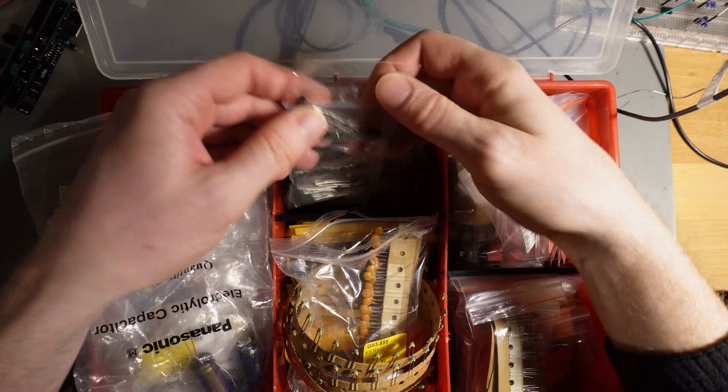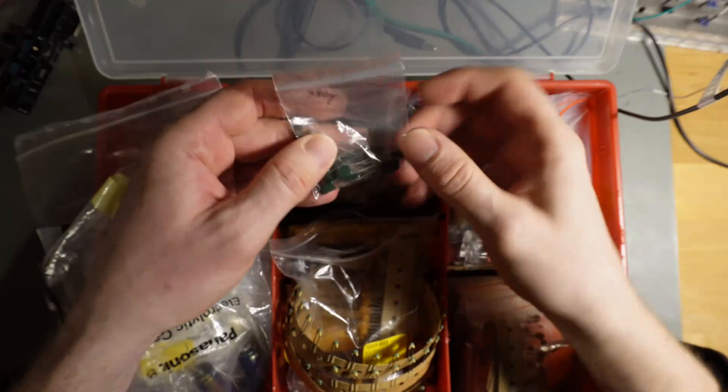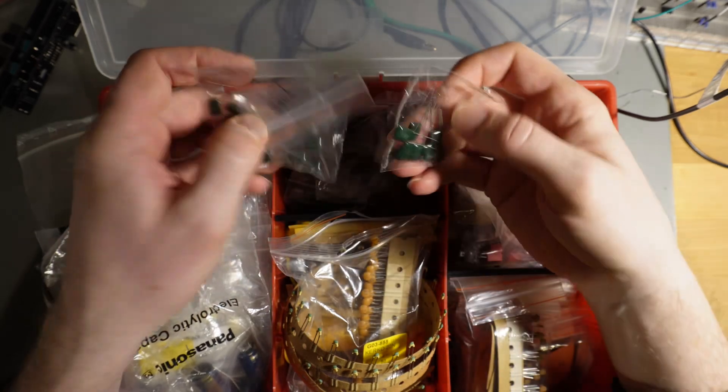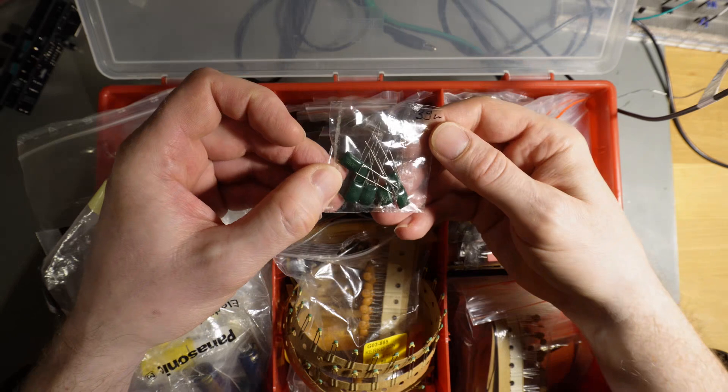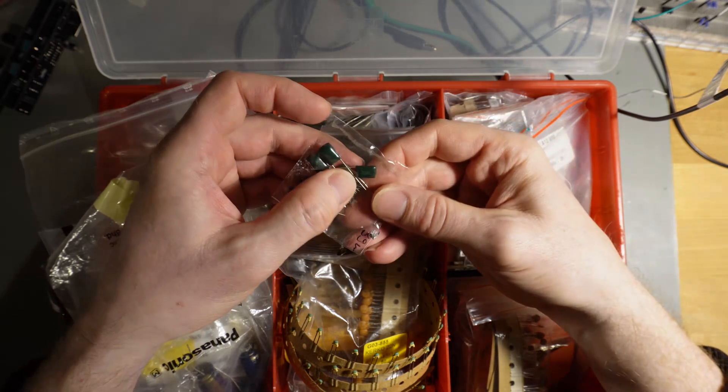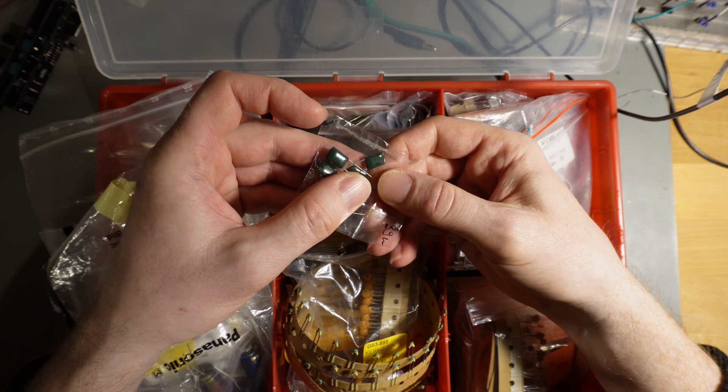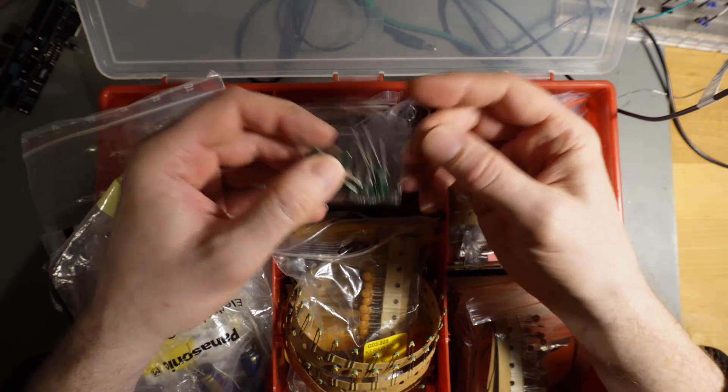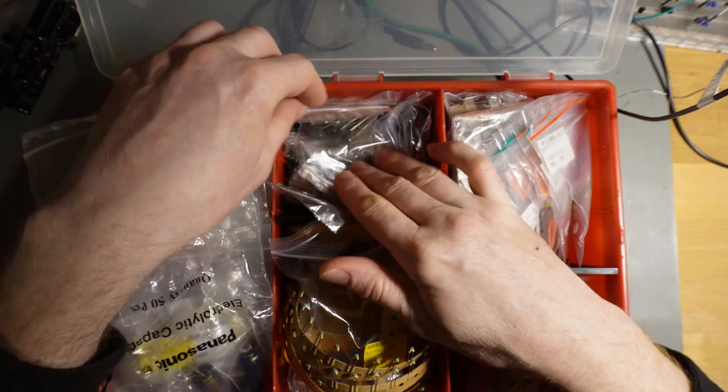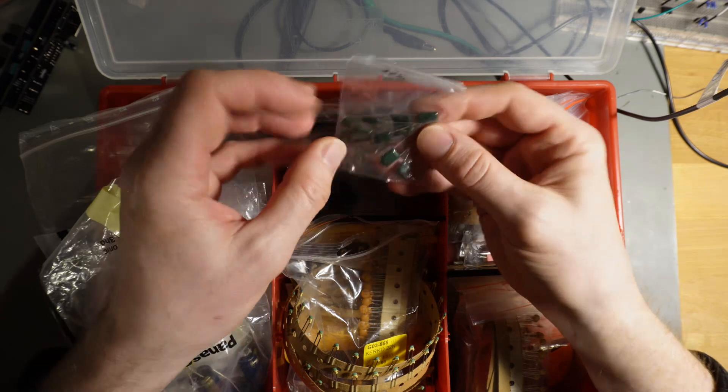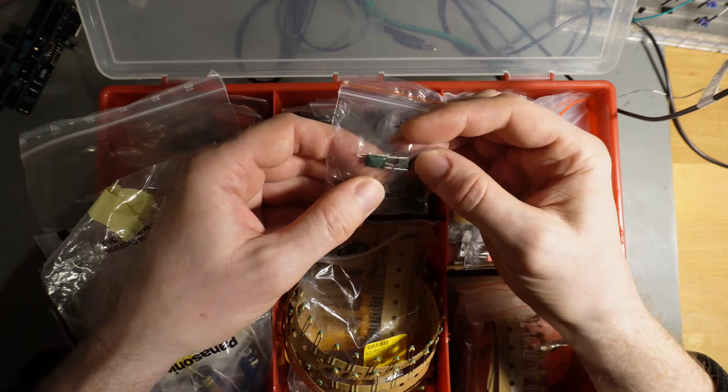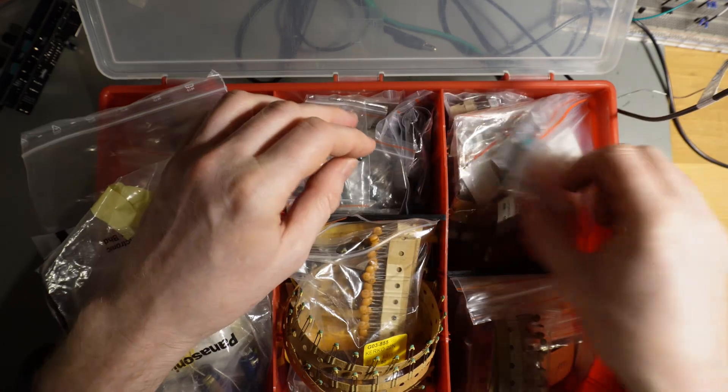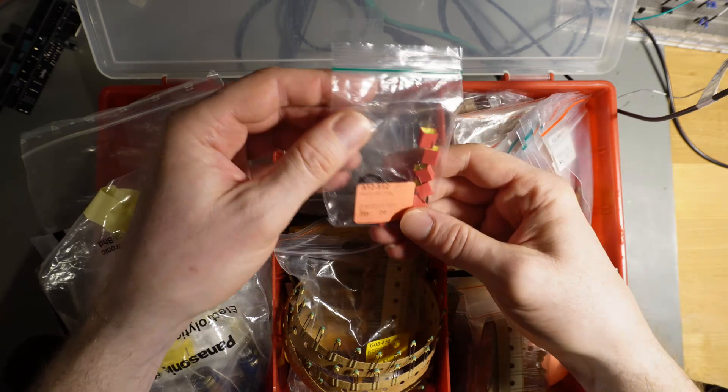This would be also here film capacitors. This is also something which you see very often, these green film capacitors here. This is also something you can use. And also here you have these annotations which we saw on the ceramic capacitors. This is very confusing I must say. This is not really standardized. This is very much different on the packages. And here's more film capacitors. This would be 33 nF.